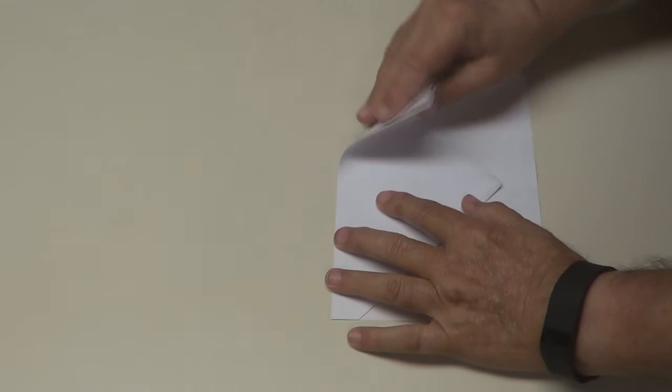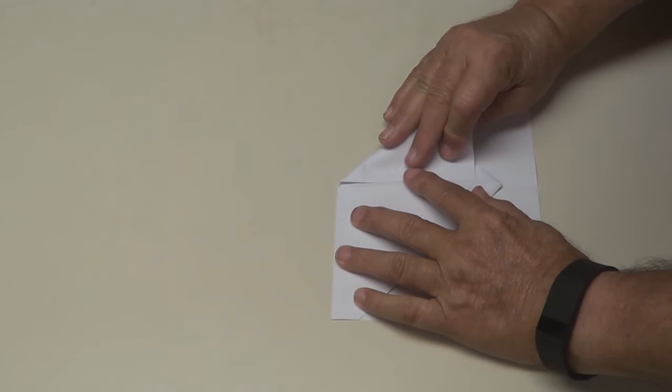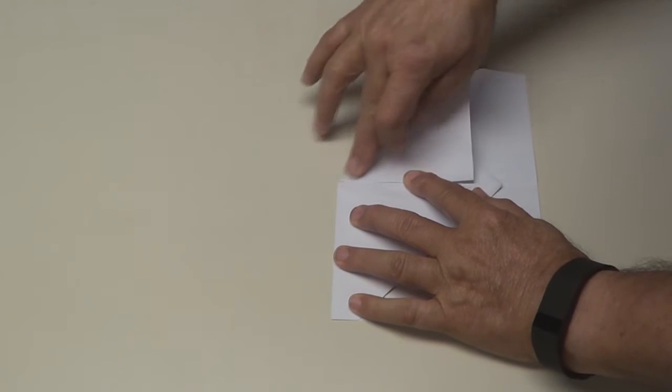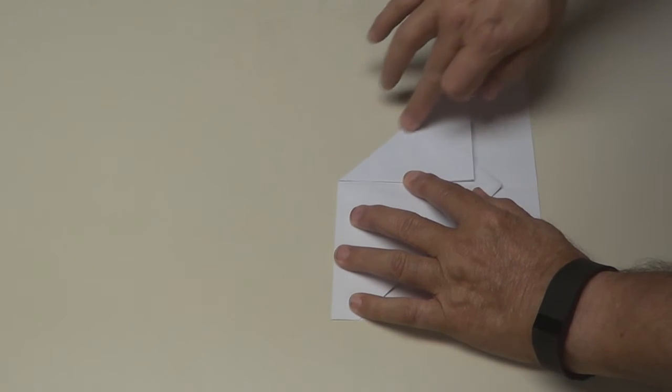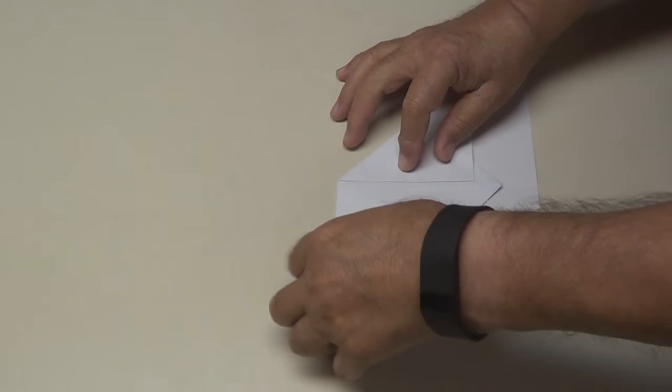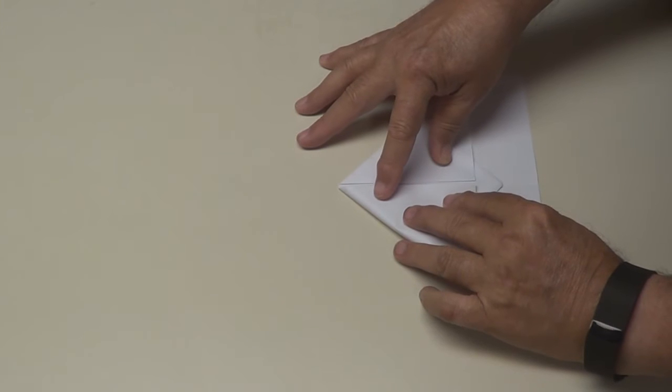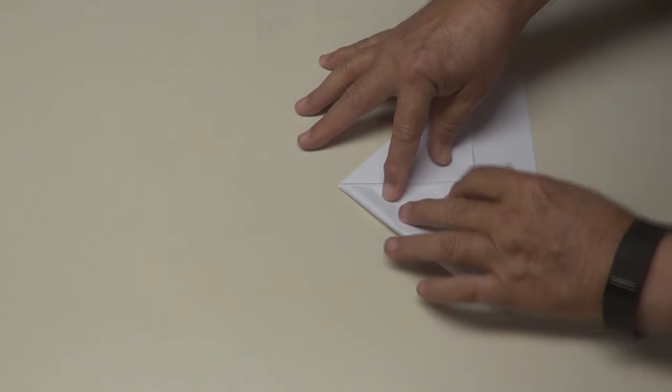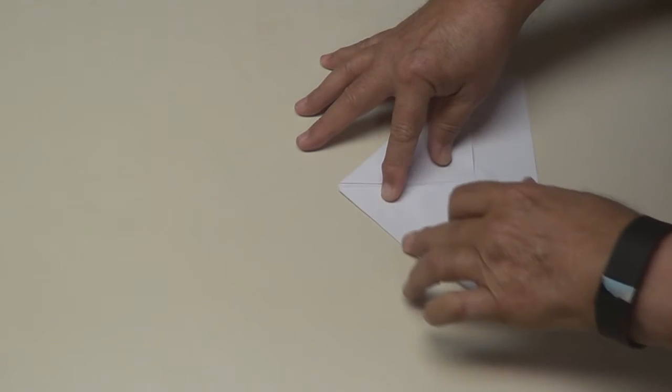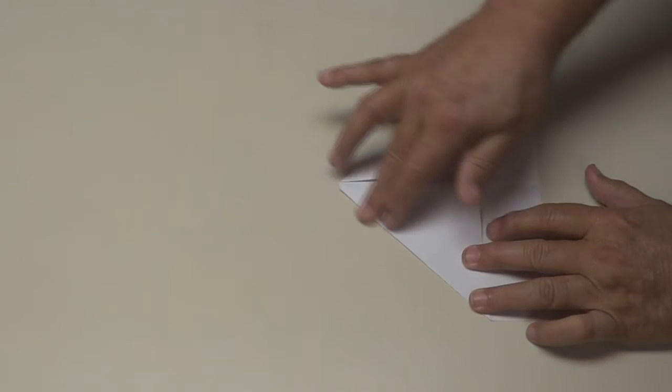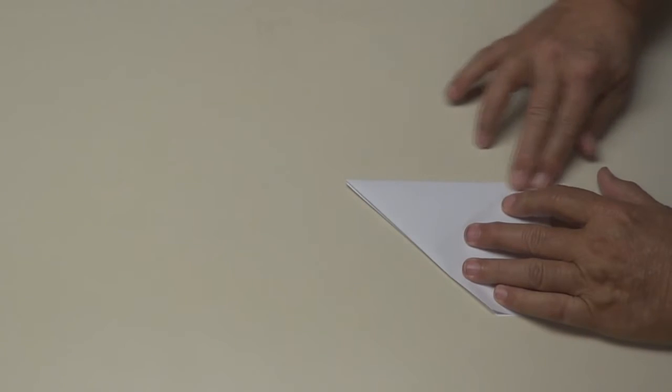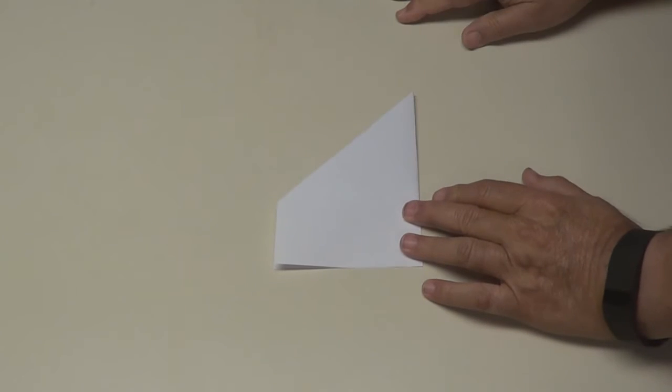Okay, now fold to the center line again, right down to the center line. Crease it. The other side the same way, right to the center line. Make them even right there. Crease it. And fold it over again. Fold it over again to your center line. Crease it good.